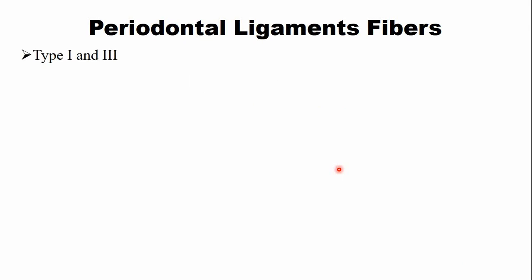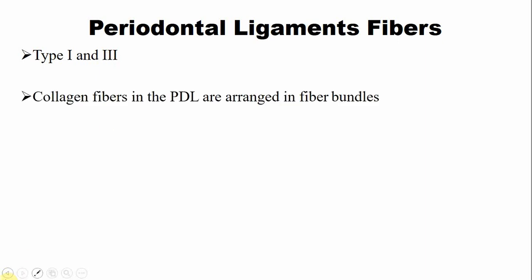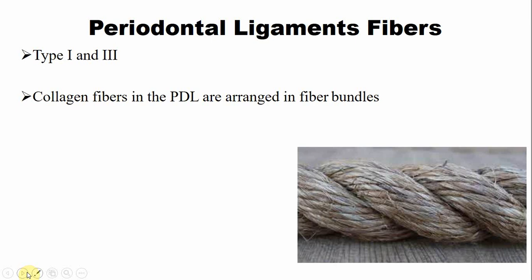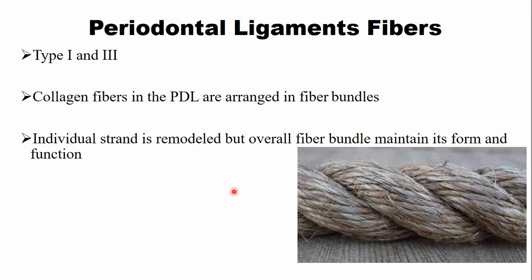The periodontal ligament fibers are mainly type 1 collagen with a smaller amount of type 3 collagen as well. The collagen fibers in the PDL are arranged in bundles, and each individual fiber is arranged in bundles. These fiber bundles have a rope-like appearance. Fiber bundles are like a rope in which the individual fibrils are present. During remodeling, the individual fibril is remodeled, but the overall fiber bundle maintains its form and function.